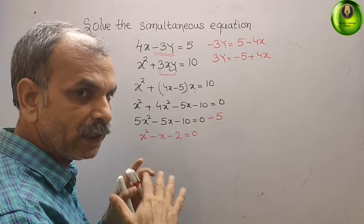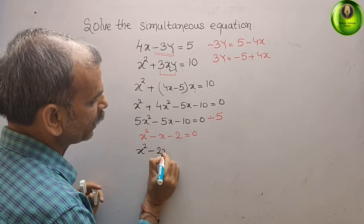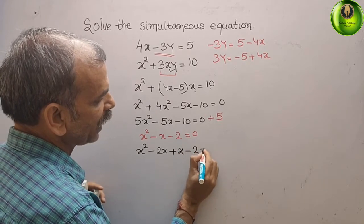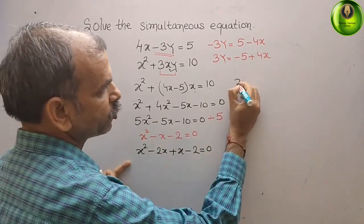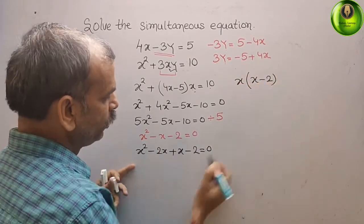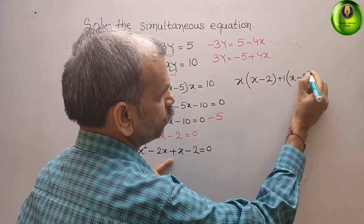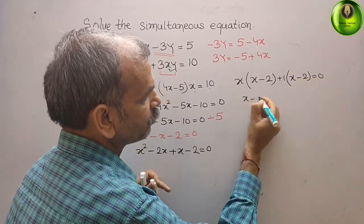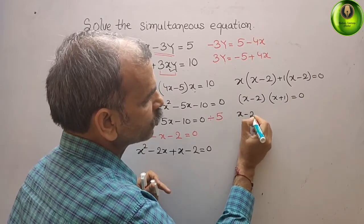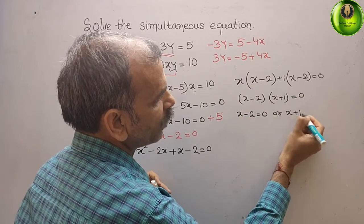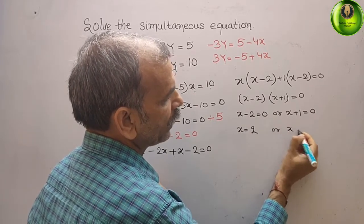Factoring x squared minus x minus 2: we rewrite as x squared minus 2x plus x minus 2. Taking x common from the first pair gives x(x minus 2), and 1 common from the second gives plus 1(x minus 2). So the factors are (x minus 2)(x plus 1) equals 0, giving x equals 2 or x equals minus 1.